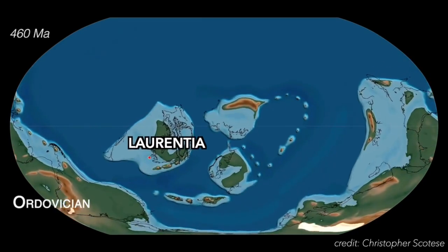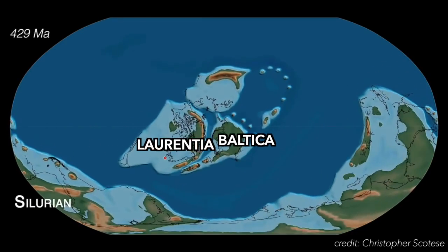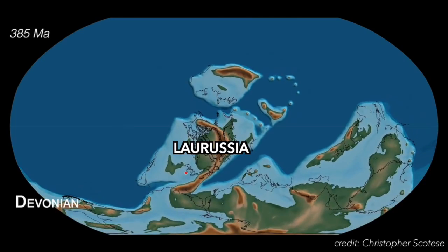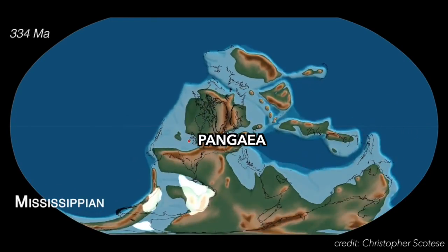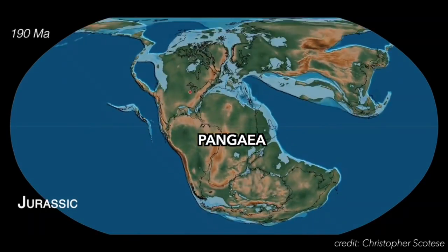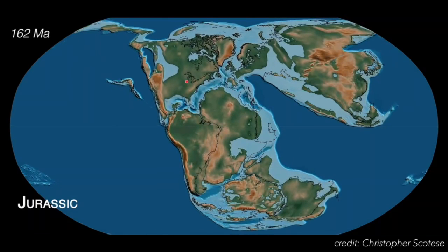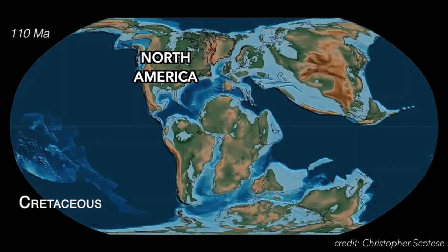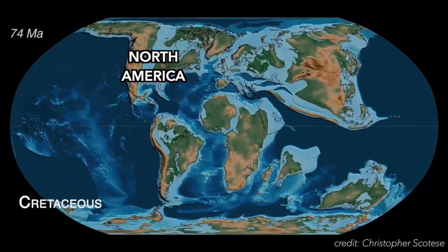At the end of the Silurian period, Laurentia collided with another paleo-continent called Baltica, forming Laurussia, which later collided with the paleo-continent of Gondwana, forming Pangaea, the last supercontinent. After Pangaea's breakup in the Mesozoic, Laurentia isn't called Laurentia anymore in paleogeography — it's just North America, with Laurentia as its craton — plus a whole bunch of new stuff accreted onto it.